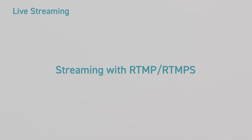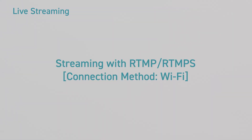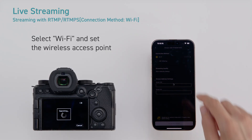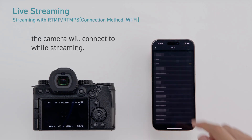Streaming with RTMP or RTMPS. Select the connection method: Wi-Fi or USB tethering. Connection method Wi-Fi. Select Wi-Fi and set the wireless access point the camera will connect to while streaming.